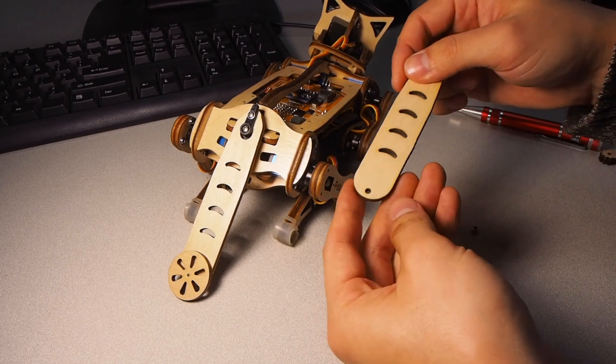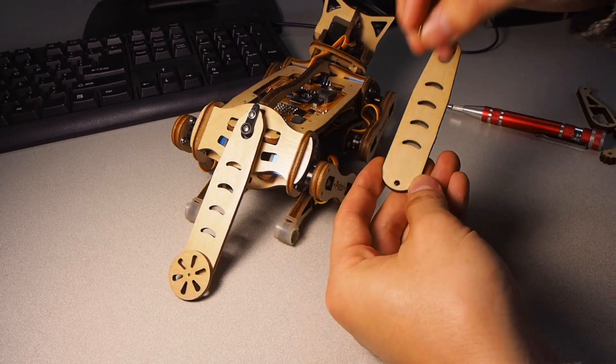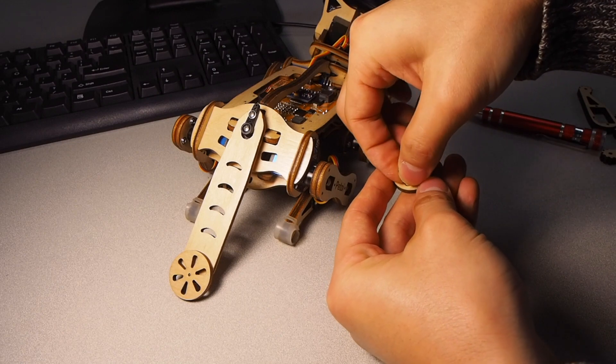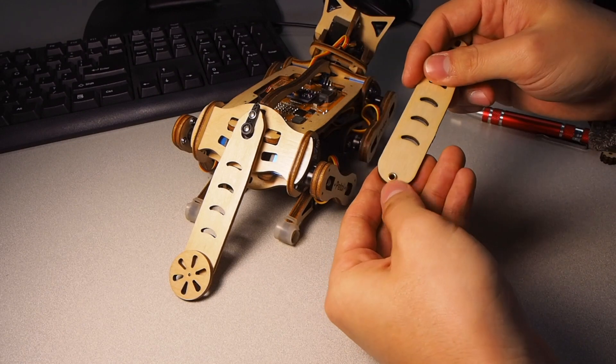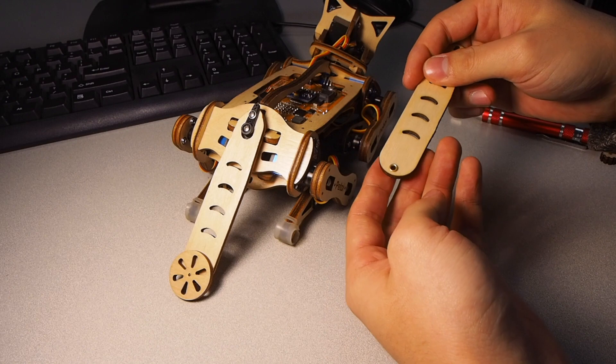And then insert the rivet through this hole. You could add some lubricant to reduce friction here.